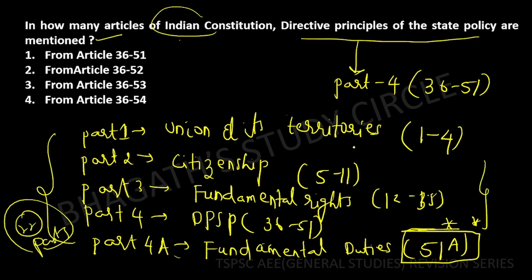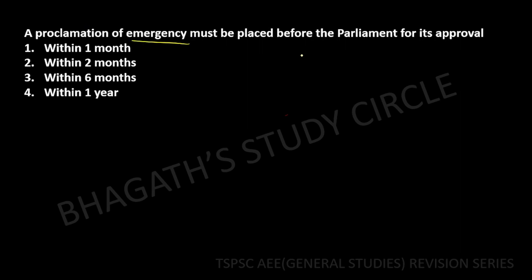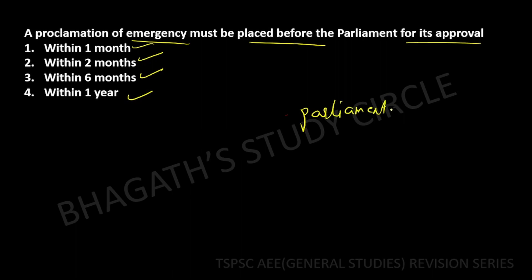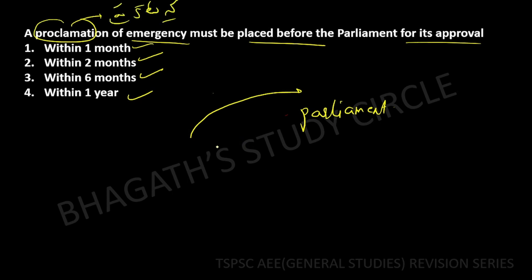A proclamation of emergency must be placed before the parliament for its approval within — one month, two months, six months, or one year? For any type of emergency, it must be approved by parliament within one month.